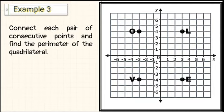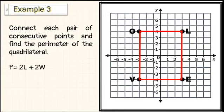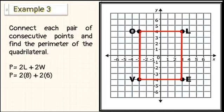Connect each pair of consecutive points and find the perimeter of the quadrilateral. Connecting the adjacent vertices, we see that points L, O, V, and E form a rectangle. To find the perimeter of the rectangle, P equals 2L plus 2W. Note that each interval in the Cartesian plane represents one unit of measure. This means that the quadrilateral formed by the points L, O, V, E has a length of 8 units and a width of 6 units. Hence, the perimeter of quadrilateral LOVE is 28 units.